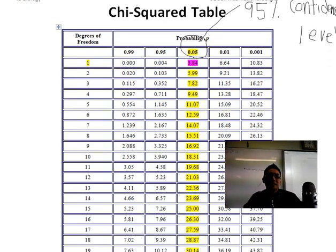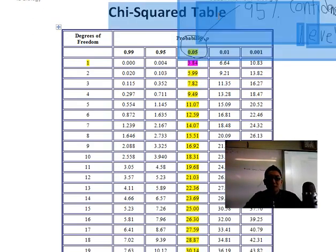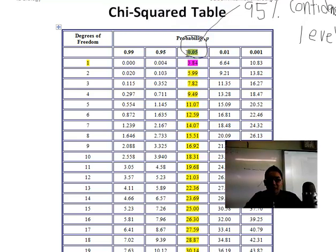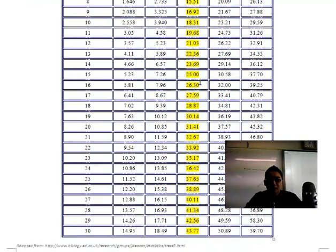And again, I'm aiming for the 95% confidence level. So you go back and refer to a table. This is a different table than the t-test table. This is called the chi-squared table. Same as before, 95% confidence, degrees of freedom 1. The critical value is 3.84.